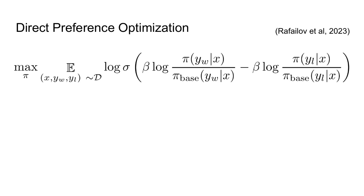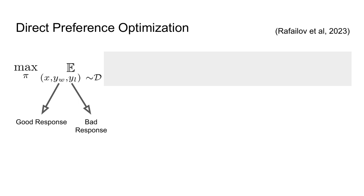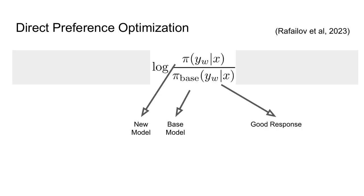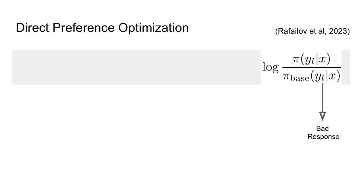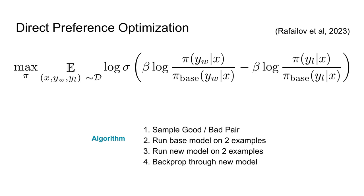DPO can be summarized by the math on this slide, which represents the objective function we are trying to optimize. We're optimizing over our policy pi, which represents the new language model we are trying to learn. The optimization first samples a prompt x and two responses: the winning response, which is good, and the losing response, which is bad. The objective itself is made up of two terms. The first term is applied to the good response yw, and consists of the log ratio of the new language model pi divided by the base language model we started with. The second term consists of the same ratio, but applied to the losing response. The full objective tells us to maximize the difference between these two terms — upweight the good examples and downweight the bad examples. The additional coefficient beta represents how close we want our new model to stay to the base model.